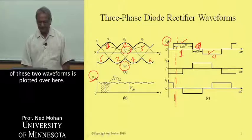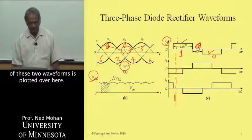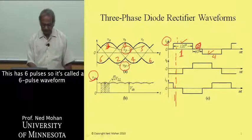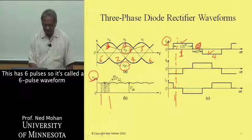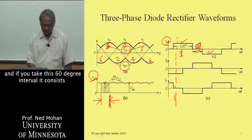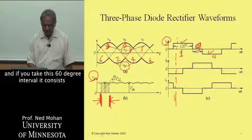The difference of these two waveforms is plotted over here. This has six pulses. So it's called a six pulse waveform.